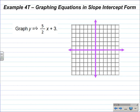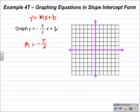Now, Example 4T — doing the same thing, understanding that the slope is m in the form y equals mx plus b, which is slope-intercept form. In this case, m is negative 5/2 and the y-intercept is 3.